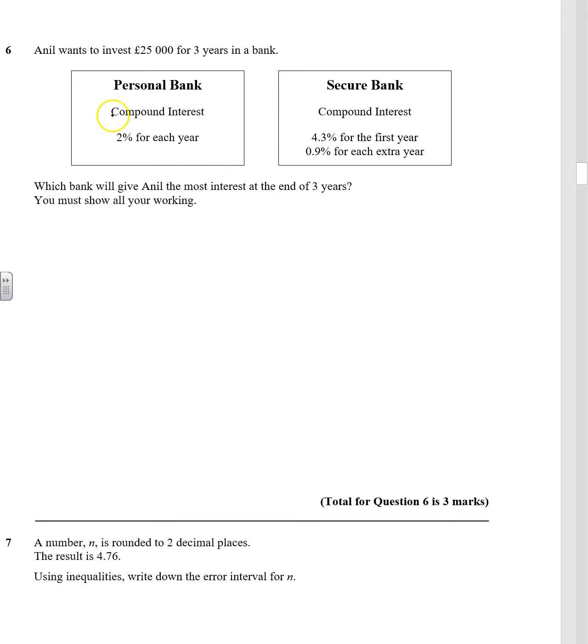Well, if we look at the personal bank to start with, we need to do £25,000. It's compound interest, 2%, so it's times your multiplier, 1.02, but it's for three years. So we can tap that into the calculator and we get £26,530.20.